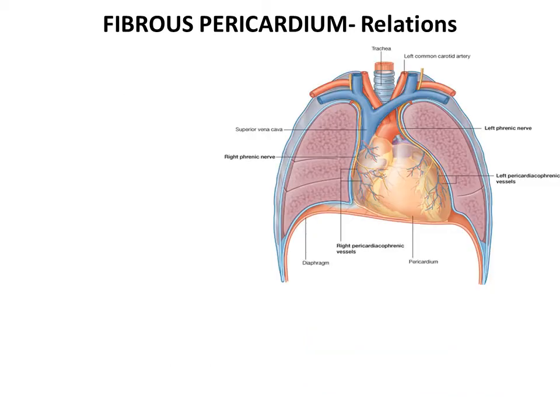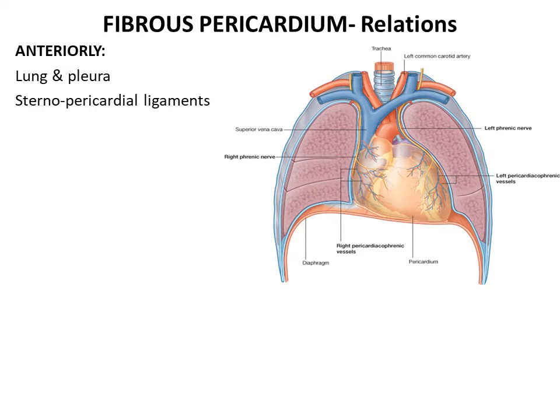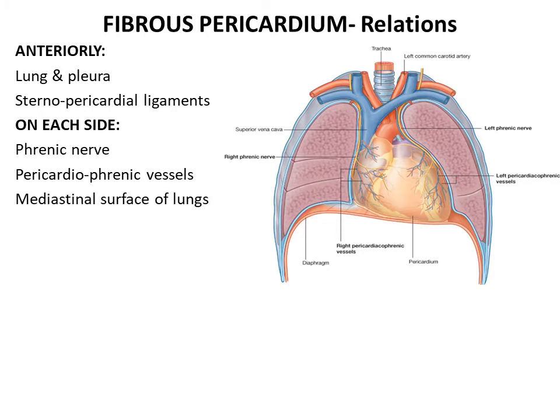The fibrous pericardium is anteriorly related to the anterior mediastinum, the anterior margin of the lung and pleura, and two ligaments connected to the posterior surface of the body of the sternum: the superior and inferior sternopericardial ligaments. On each side, the phrenic nerve descends accompanied by the pericardiophrenic vessels, further related to the mediastinal pleura and the mediastinal surface of the lungs.